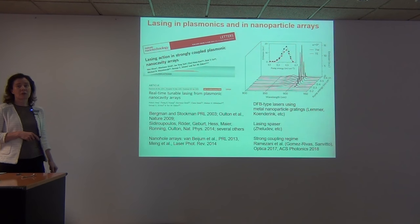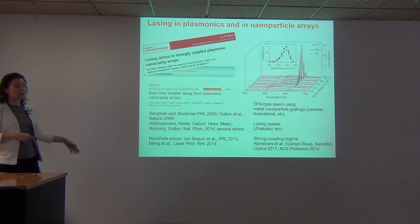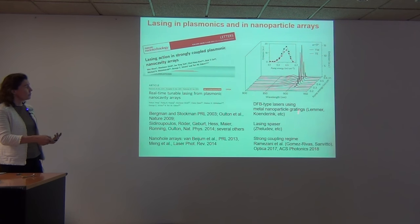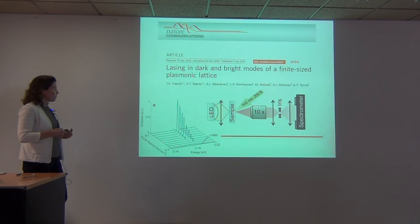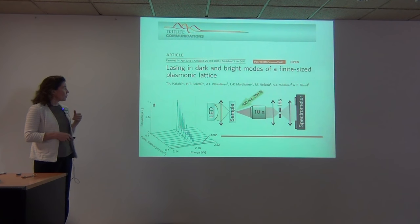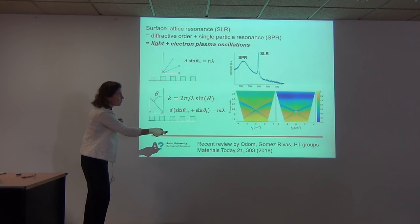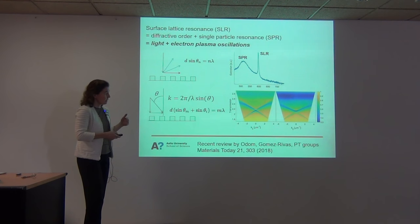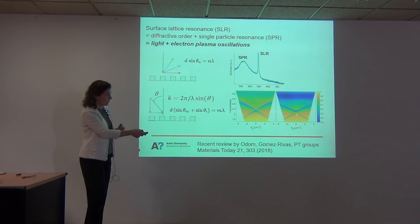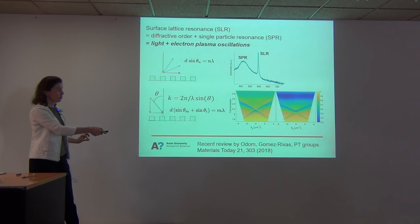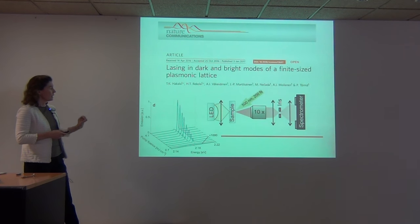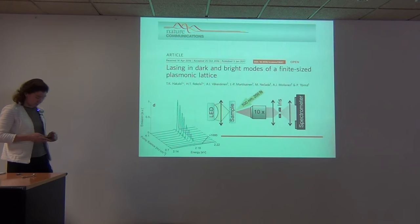We have also done a lot of work on lasing, and so have others. In plasmonic systems in general there are many lasing works, and people have also shown lasing in this type of array. We recently published a work on lasing, and the specialty was that we saw lasing both in the dark and the bright modes of the system. The bright mode we can see in transmission measurements, and the dark one we can't see in transmission. But for lasing, since you can feed the dark mode from the molecules, you can also see it because we have a finite size array. So both of them lase simultaneously.